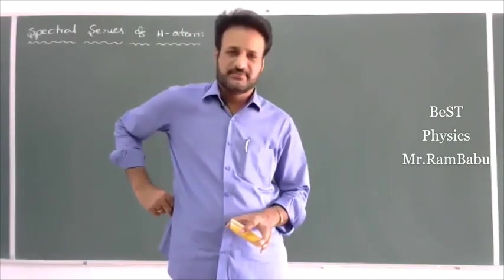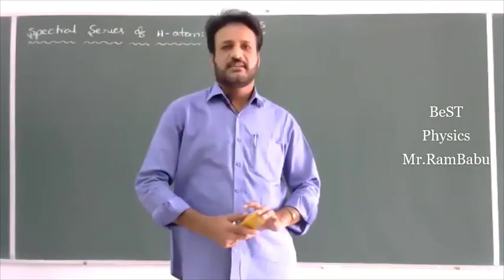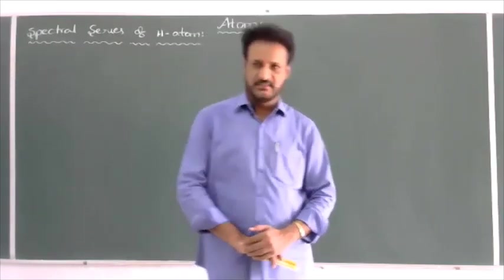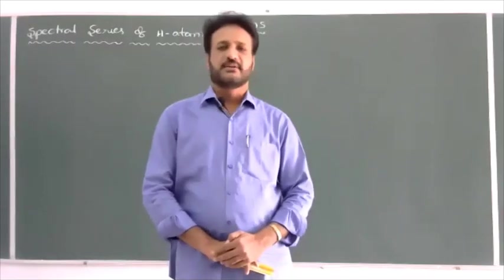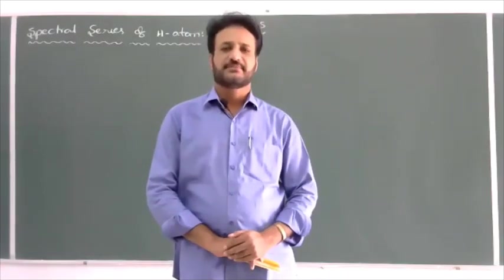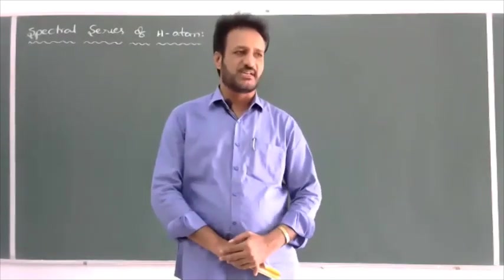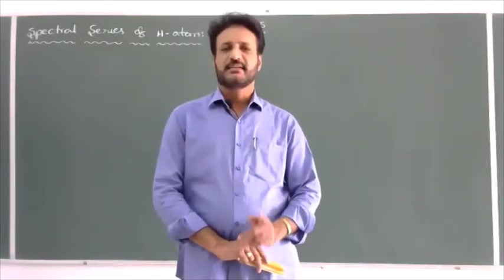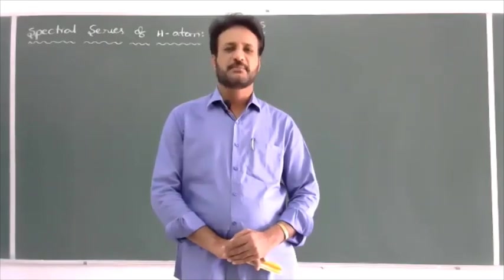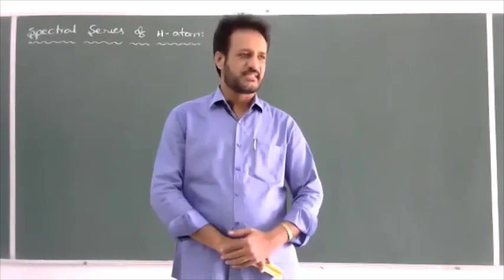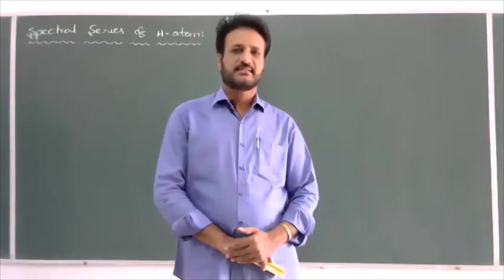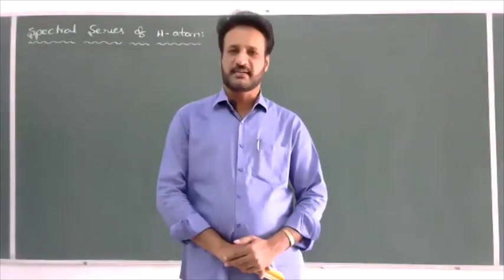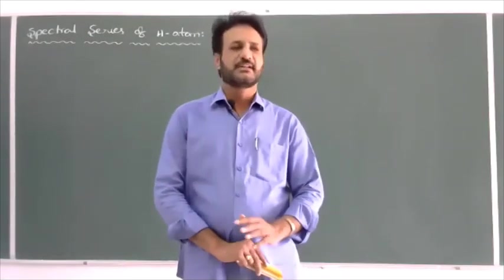Good morning students. In a previous class we derived the Rydberg formula — what is a spectral line, what is the energy of electron in the nth stationary orbit, what is the wave number, what is the frequency, what is atomic spectra, what is the spectrum produced by hydrogen. We discussed in the previous class and last we gave one formula for wavelength of the spectral lines, which is also called the Rydberg formula.